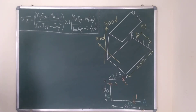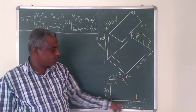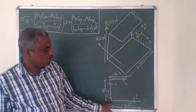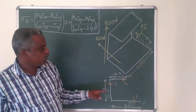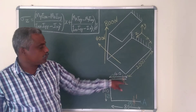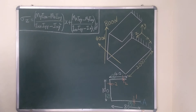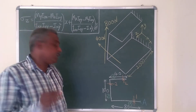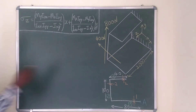I have to calculate X-bar and Y-bar. In order to do that, I have divided this into 3 sections: Section 1, Section 2, and Section 3. Section 1 is 80×1, Section 2 is 100×2, and Section 3 is 40×2. The formula is: X-bar = (A1·X1 + A2·X2 + A3·X3) / (A1 + A2 + A3), and similarly for Y-bar.